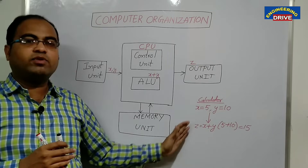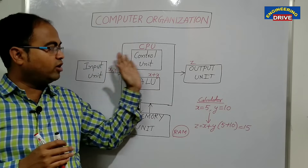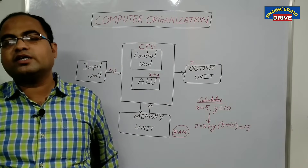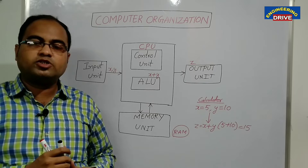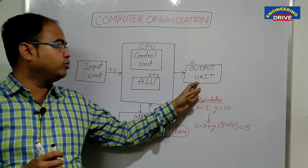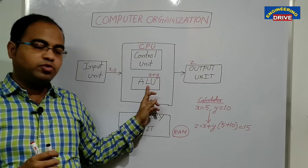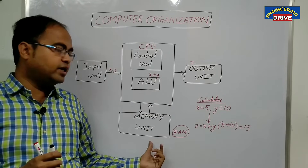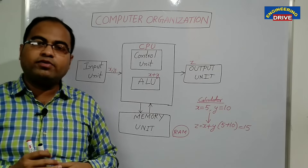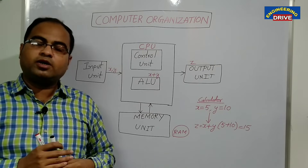This is the general working of all five functional units of a computer. What are the five functional units? One is the input unit, output unit, control unit, arithmetic and logic unit, and the final one is the memory unit. These five units play a very vital role in making our computer work properly.